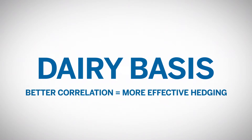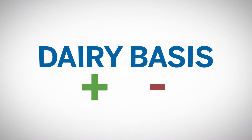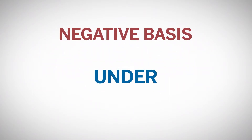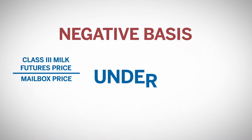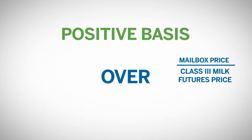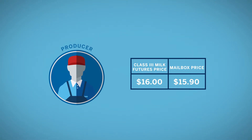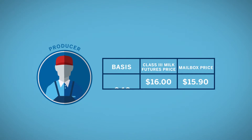The better the correlation, the more effective the hedging strategy will be. The basis can be either positive or negative. A negative basis is referred to as being under — the mailbox price is lower than the Class 3 milk futures price. A positive basis is referred to as being over — the Class 3 milk futures price is lower than the mailbox price. For example, suppose the Class 3 milk futures price is $16 per hundredweight. If the mailbox price is $15.90, the basis would be $0.10 under. If the mailbox price is $16.20, the basis would be $0.20 over.